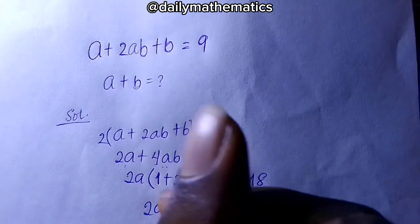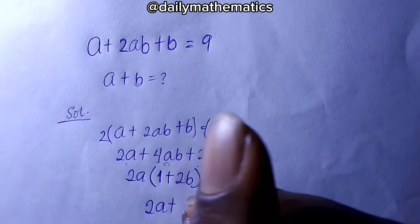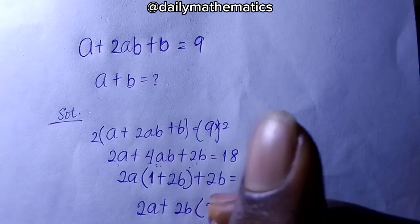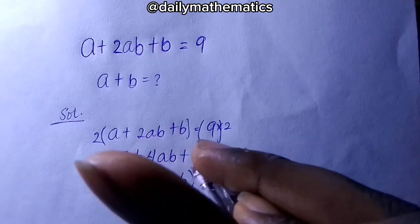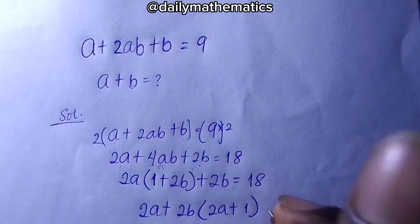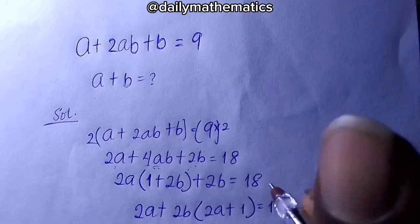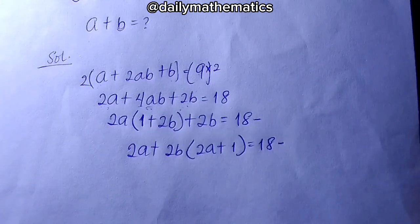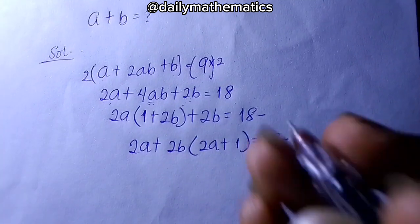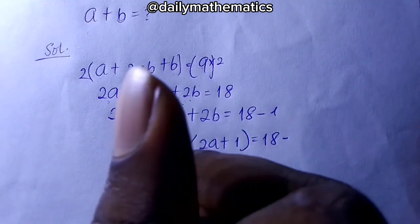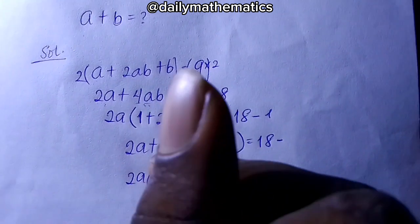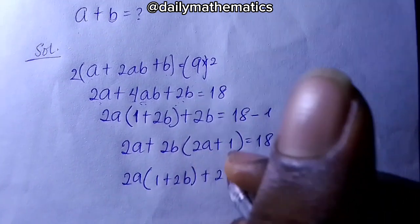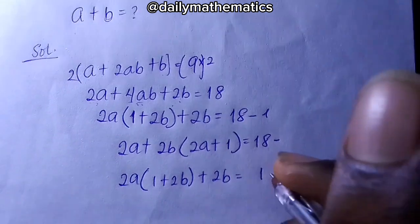It can also work the other way — factorizing 2b out: 2b bracket 2a plus 1 equals 18. I can use either approach, but I'll go with the first one: 2a bracket (1 plus 2b) plus 2b equals 18.